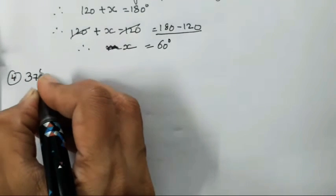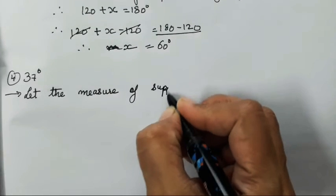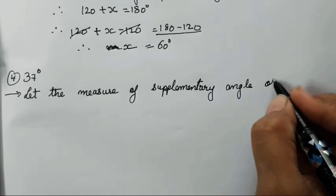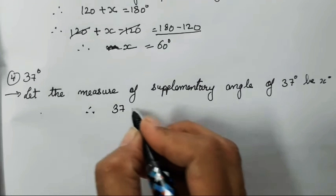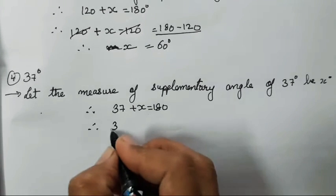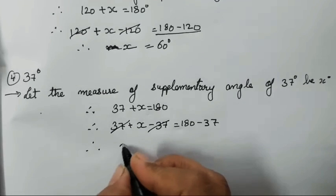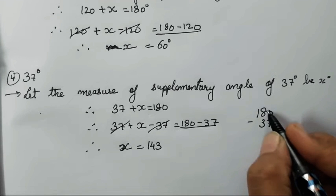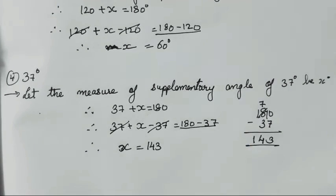Now the fourth sum is 37 degrees. Let the measure of the supplementary angle of 37 degrees be x — you can take any variable here. Therefore 37 plus x equals 180. Subtracting 37 from both sides, x equals 143. Many of you may not get the subtraction, so I am showing it here: 180 minus 37 equals 143. In this way you will have to subtract.